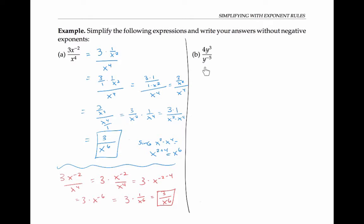The second problem can be solved in similar ways. Please pause the video and try it before going on. One way to simplify would be to use the negative exponent rule first and rewrite y to the minus 5 as 1 over y to the fifth. Thinking of this as a fraction divided by a fraction, I can multiply by the reciprocal and get 4 y cubed times y to the fifth over 1. By the product rule, the numerator is 4 y to the eighth, so my final answer is 4 y to the eighth.